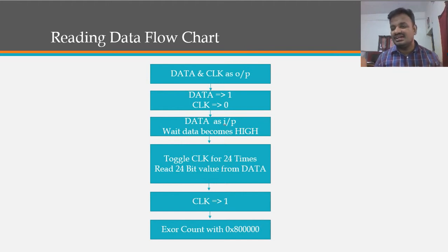Toggle the clock for 24 times and read the bit value from the data. We will be getting that 24 bits of data. Make that clock to high again, and we will be having the 24 bits of count in our count variable.